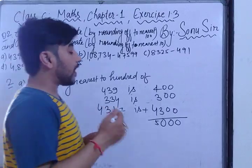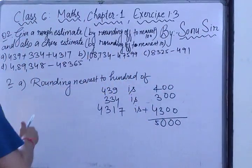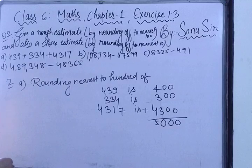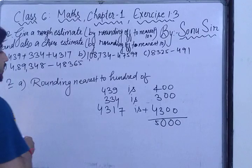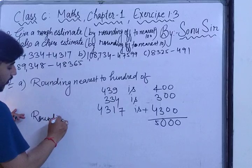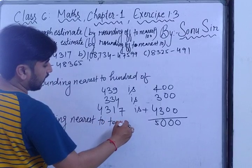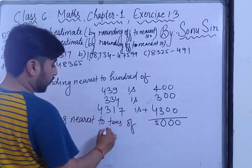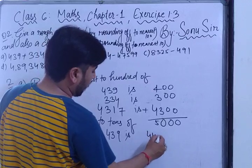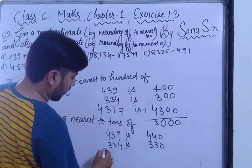So the nearest value of 100 gives 5000. Now for rounding nearest to tens: 439 rounds to 440, 334 rounds to 330, and 4317 rounds to 4320.